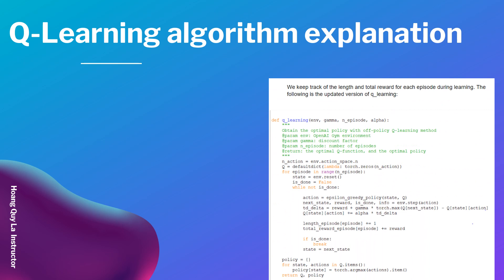After that, we will keep track of the length and total reward for each episode during learning. The following is the updated version of Q-Learning. We've got the Q-Learning with the environment, gamma, number of episodes, and alpha. We obtain the optimal policy with the policy Q-Learning method. The parameters are: the environment is OpenAI Gym, gamma is the discount factor, and episodes is the number of episodes.